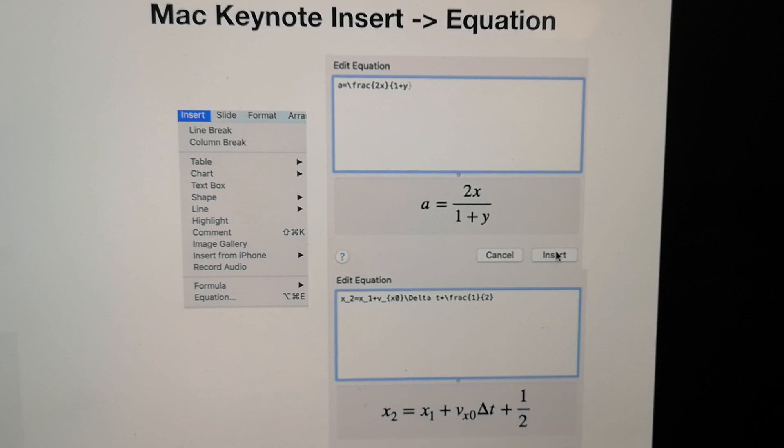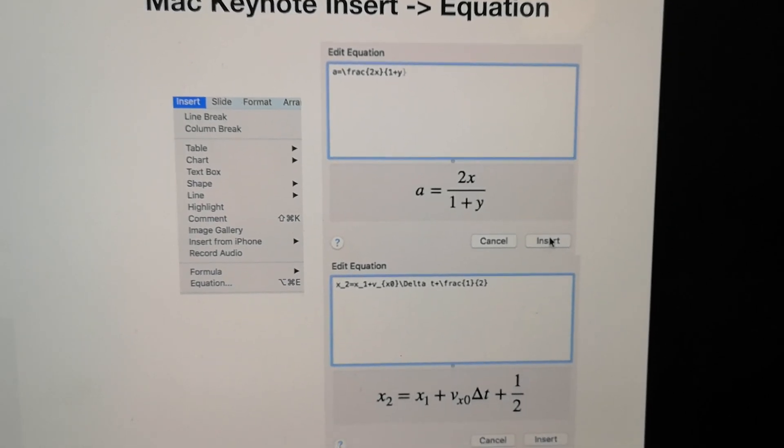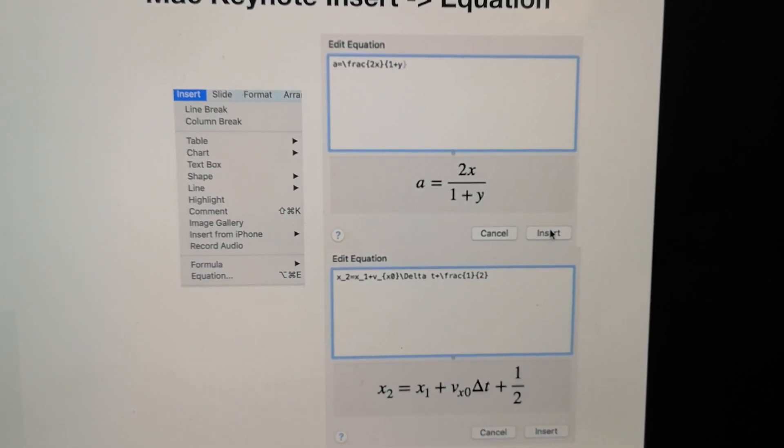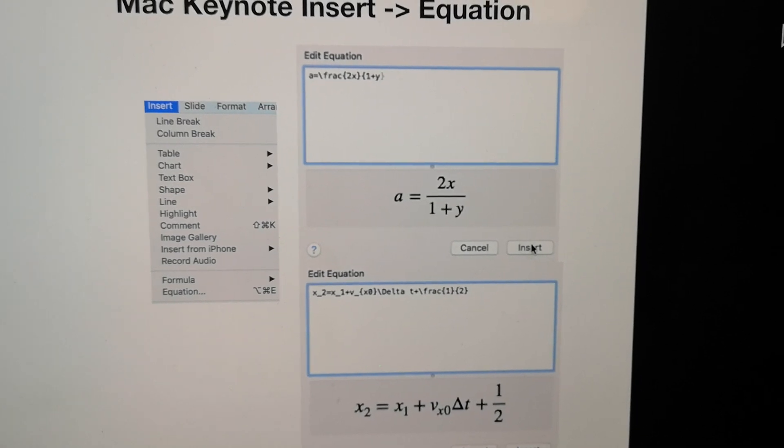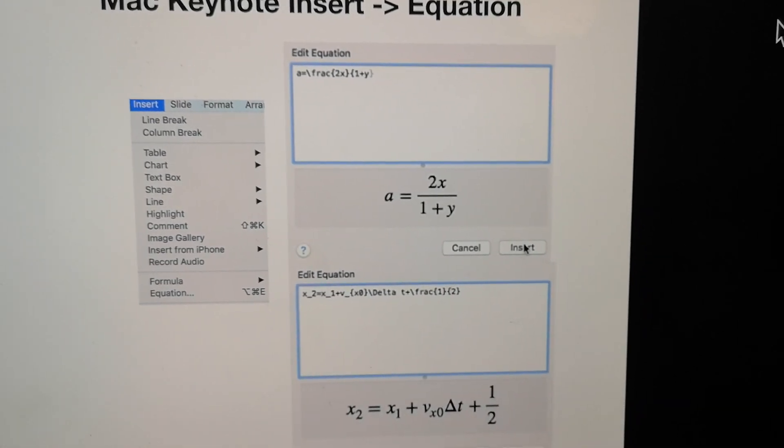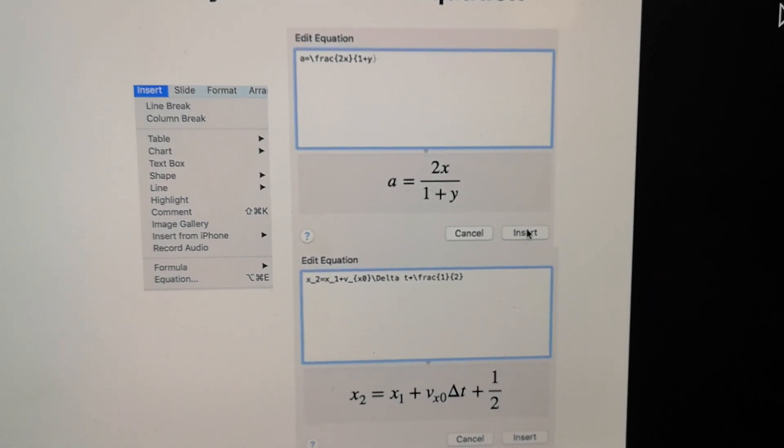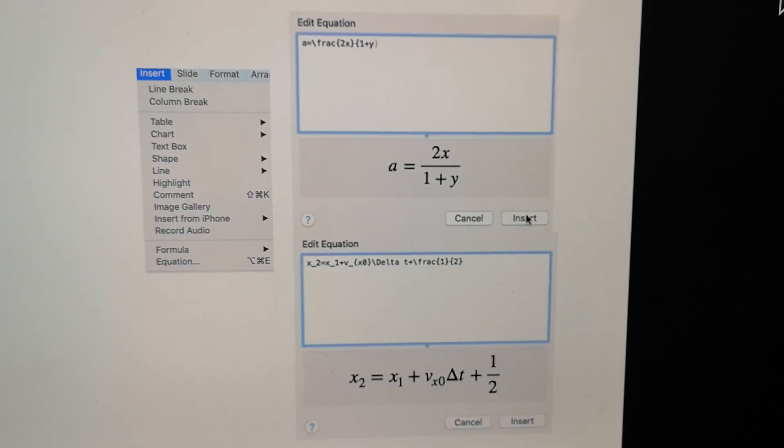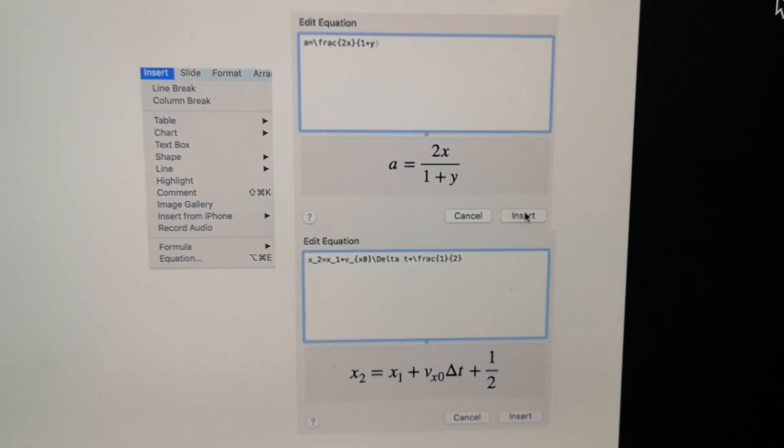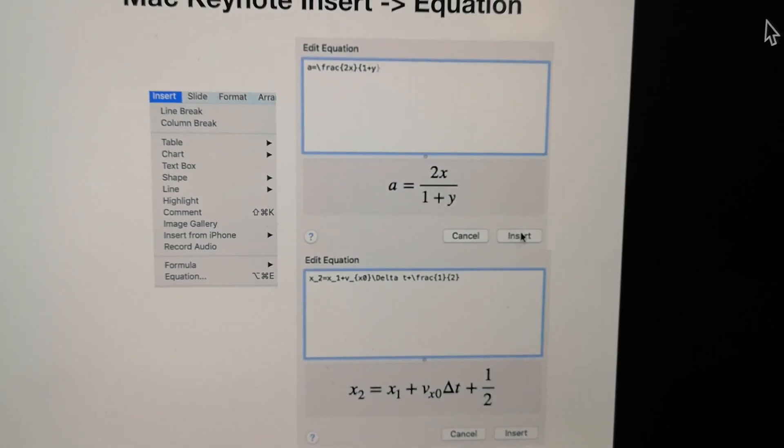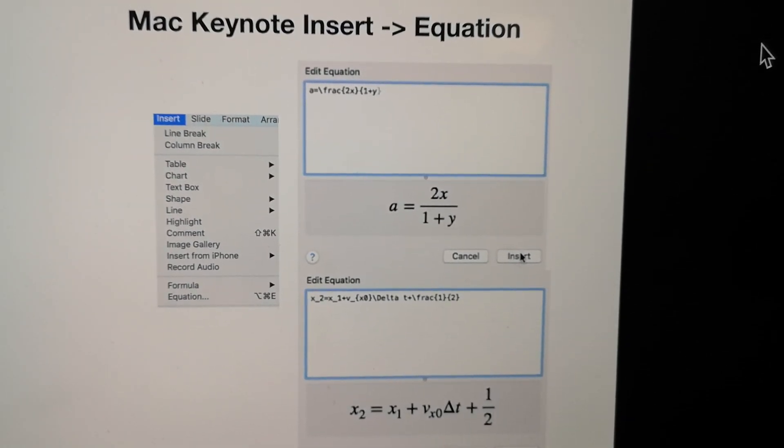In the edit equation you just type the formula you want to put there. And then below that you can see how it looks like when it presents in the final document. And just insert it. Then you can throw a picture in the PowerPoint or Keynote in this case.